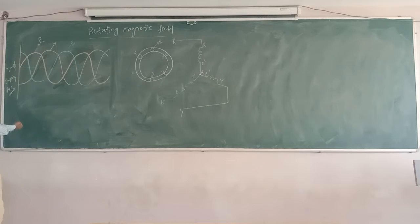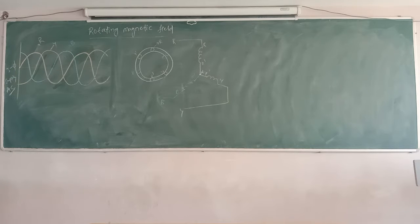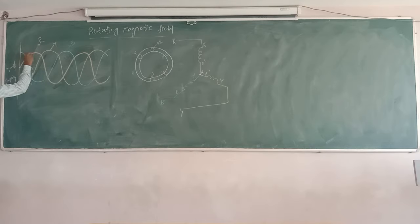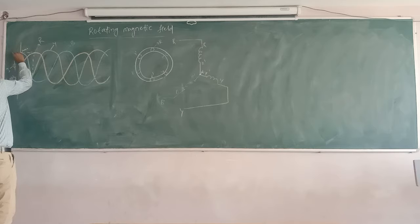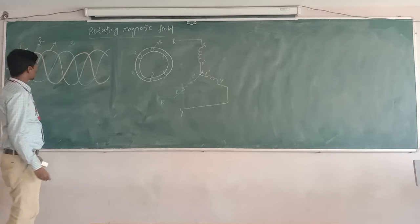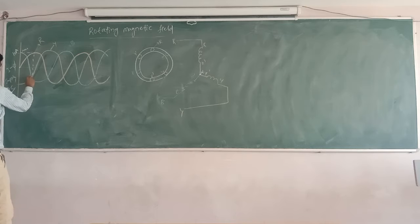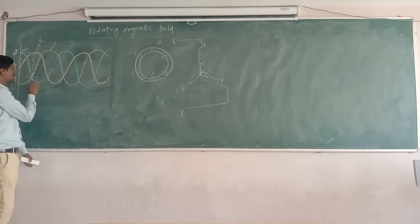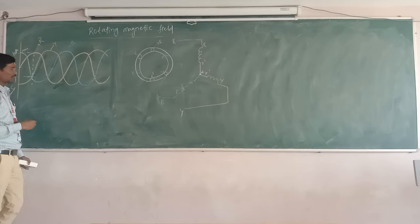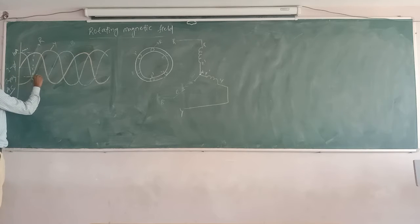Now, whenever we are giving three-phase supply, this is the three-phase AC supply we are giving to the stator of the induction motor. Then what will happen? Whenever we are giving three-phase supply, for example, at this instant, let us start from where R phase is at maximum — that is, the peak value. So this R phase peak value is, let us say, 10 amperes for example. And at this point, Y phase and B phase are not at maximum — the touching point is not maximum. This value would be less than 10 amperes, so let us take 5 amperes.